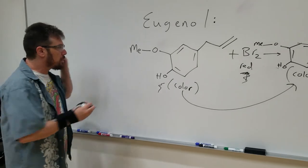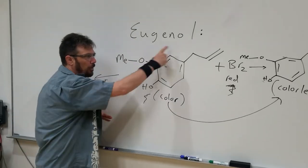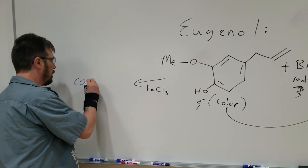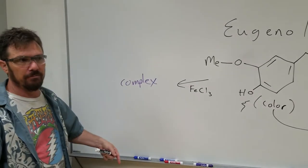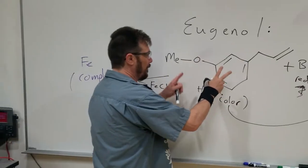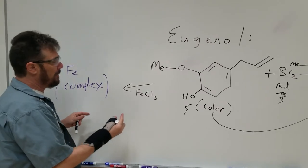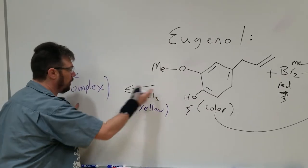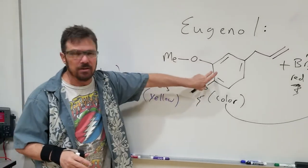Another test we're going to use is iron chloride — it complexes with phenols, and the color of this complex is purple. Amazingly, this reaction has been around for almost 100 years and we still don't know exactly what this iron complex is. All phenols tend to do this with iron. The iron chloride is a yellow solution, but when we add it to a phenol it makes a purple complex. That gives us some verification that the compound does indeed have a phenol in it.